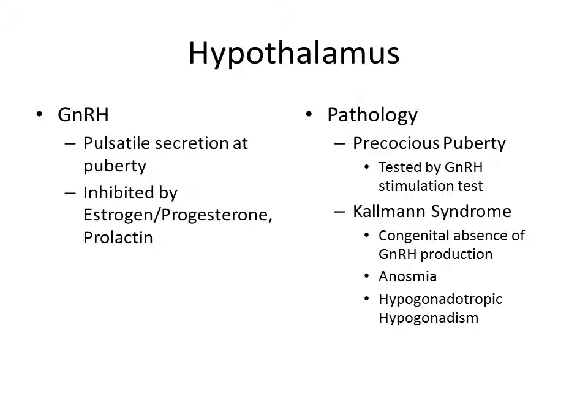At the hypothalamus, GnRH is not really secreted before puberty, but you do see a pulsatile secretion at puberty. It's inhibited by estrogen, progesterone, and also prolactin. Pathologies include precocious puberty, tested by the GnRH stimulation test, and Kallmann syndrome — a congenital absence of GnRH production. You'll see anosmia because the cells don't migrate from the olfactory portion, and hypogonadotropic hypogonadism with smaller gonads.